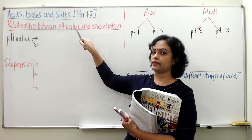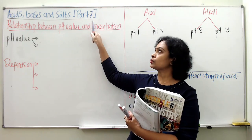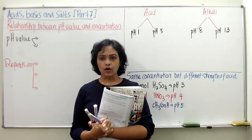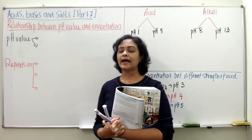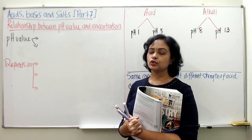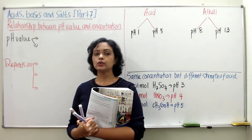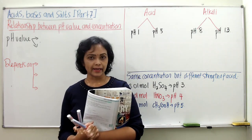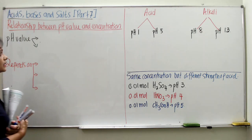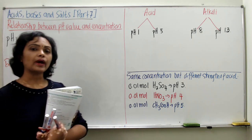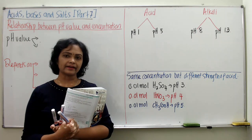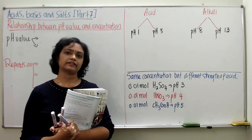So please rectify that. Today we are going to continue on Part 7 for the chapter Acid, Bases and Salts. The subtopic we are going to look at today is the relationship between pH value and concentration for acid and alkalis.